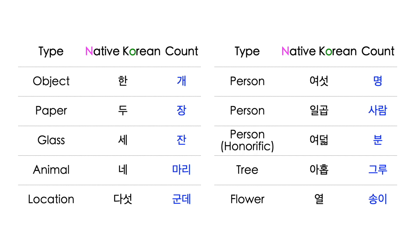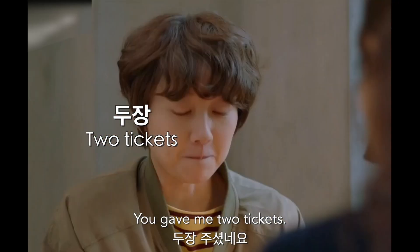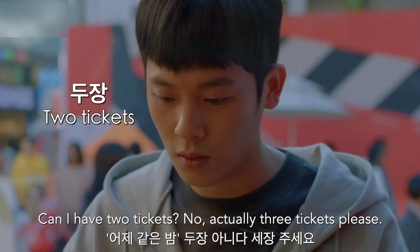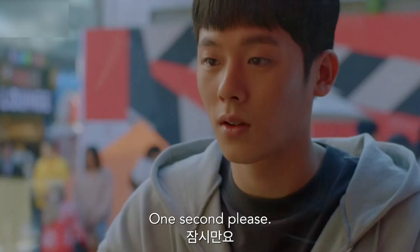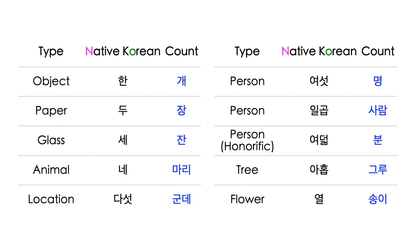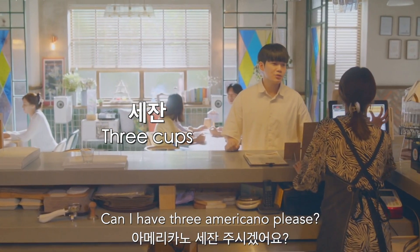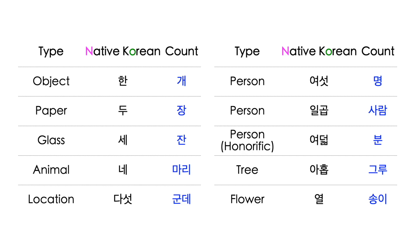장 is a counter for anything made of paper or something as thin as paper. 잔 is a counter for a glass or a cup. Counter for animal or creature is 마리. When we say 네 마리, the final consonant 시옷 is dropped from 넷 for better flow of sound.